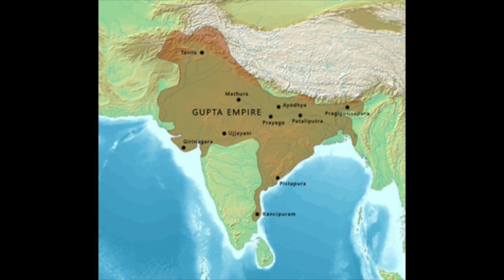He was then succeeded by his son, Chandragupta II, who expanded Gupta rule to western India and southern Pakistan. Like his predecessors, Chandragupta II was a talented general and a superb statesman. He expanded the navy and gave the Gupta Empire a coast on the Arabian Sea, establishing Tamar Lipta and Sopara as significant port cities.